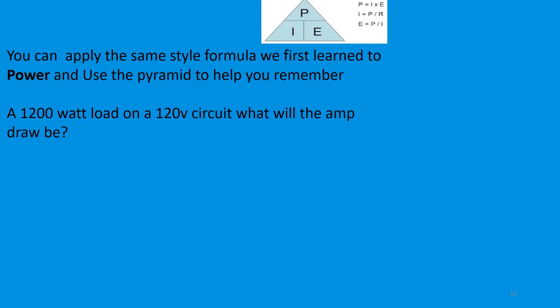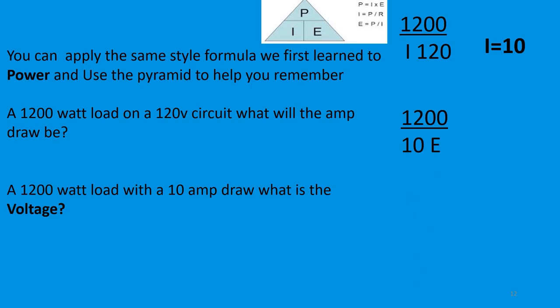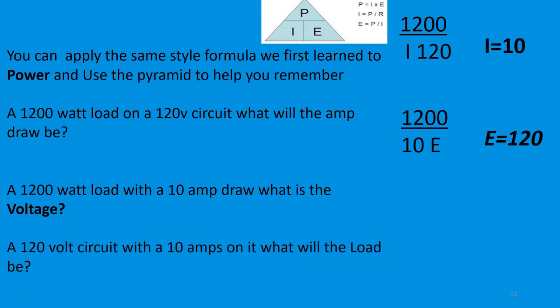A 1200-watt load on a 120-volt circuit — what will the amp draw be? You type in what you know: the wattage and the voltage, and you're looking for amperage. Divide 120 up into 1200 and you get 10 amps. Next: a 1200-watt load with a 10-amp draw — what is the voltage? Divide 10 up into 1200 and you get 120 volts. Finally: a 120-volt circuit with a 10-amp draw — what is the load? Multiply 10 by 120 to get the power: 1200 watts.